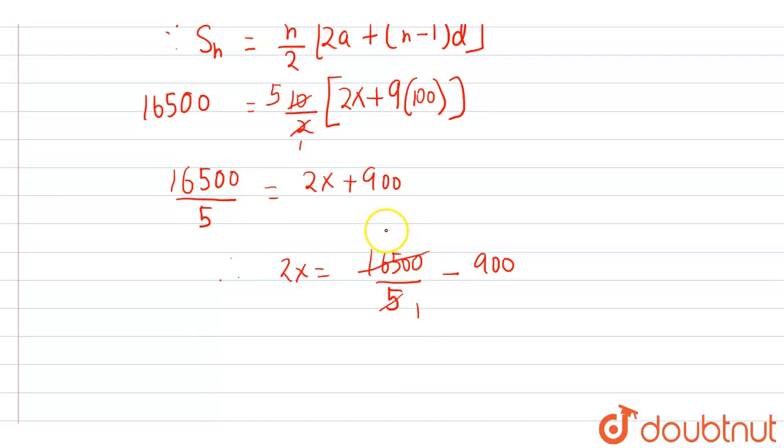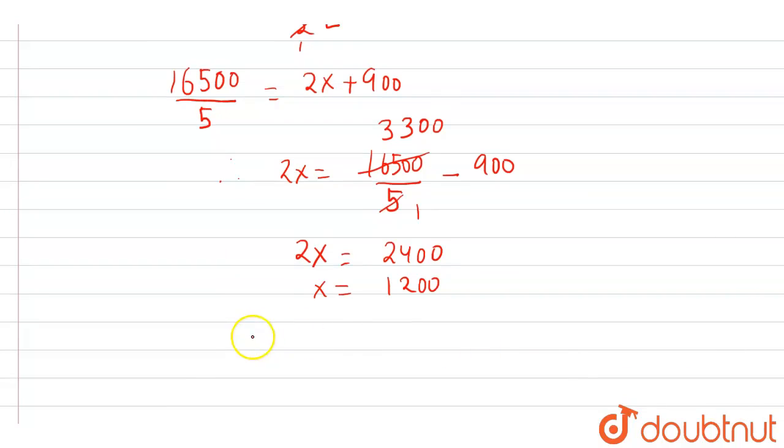16,500 divided by 5 gives us 3,300. Subtracting 900 from 3,300 gives 2,400. So 2x = 2,400, which means x = 1,200.